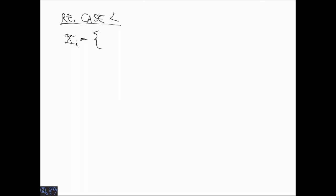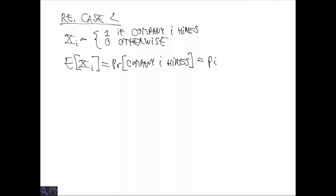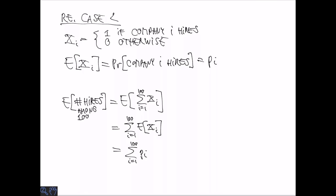In case two, we can think about random variables Xi, where Xi is 1 if company i hires and 0 otherwise. The responses from the companies can be interpreted as expectations for this random variable. The number of hires in expectation is simply the sum of these random variables, which is the sum of expectations, which is the sum of the reported numbers pi. This is the number of hires among the 100.